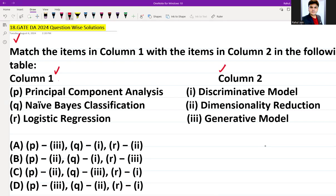The first is PCA, Principal Component Analysis. The second one is Naive Bayes classification technique, and the third one is Logistic Regression.